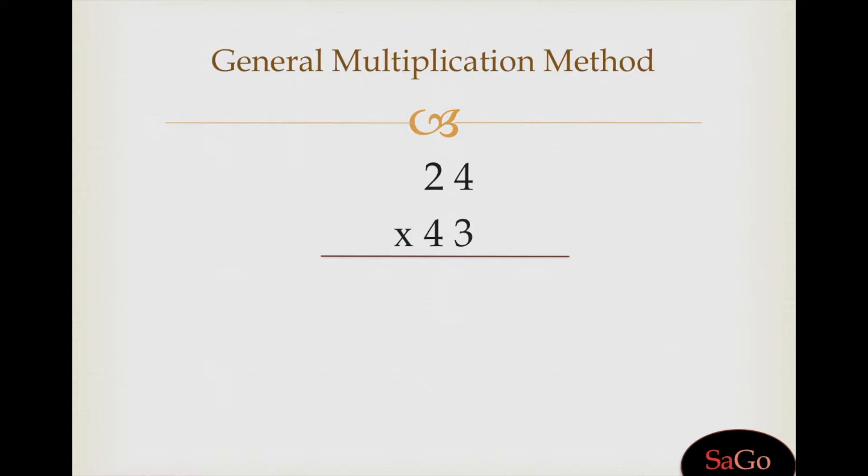We have the sum 24 × 43. The pattern we'll follow here is I × I. I means 4 × 3. Remember the pattern I × I—I on the right-hand side is 4 into 3, which makes 12. Write 12, put a slash.